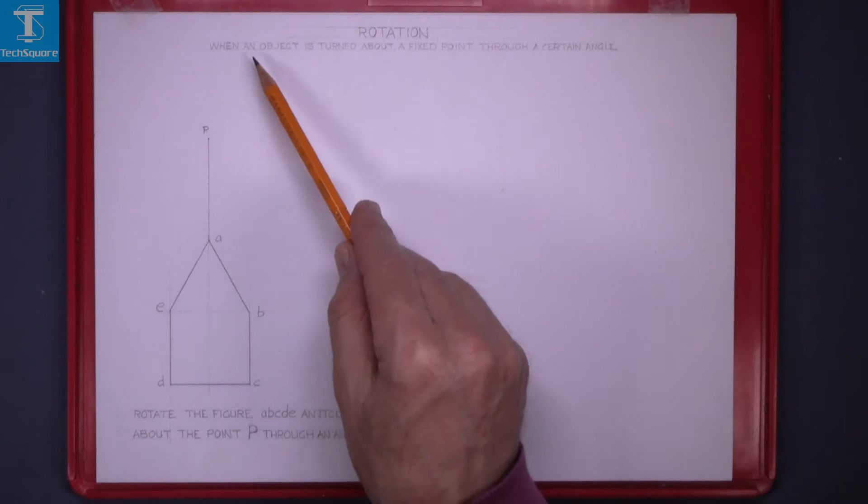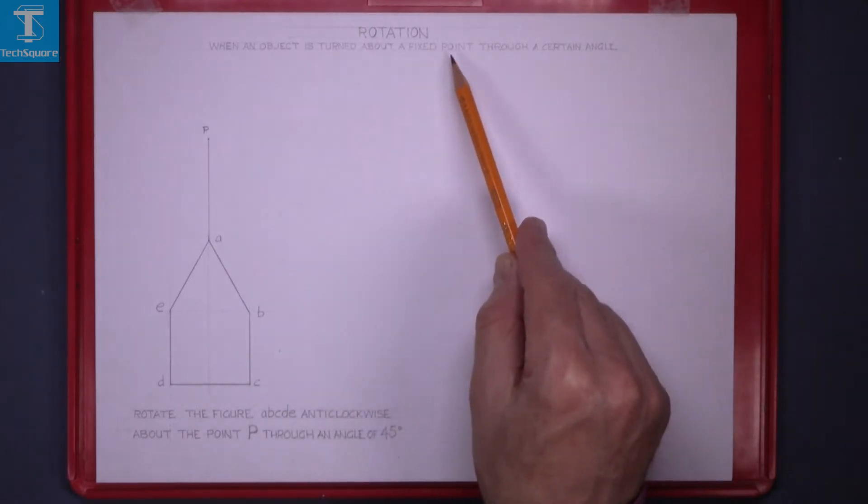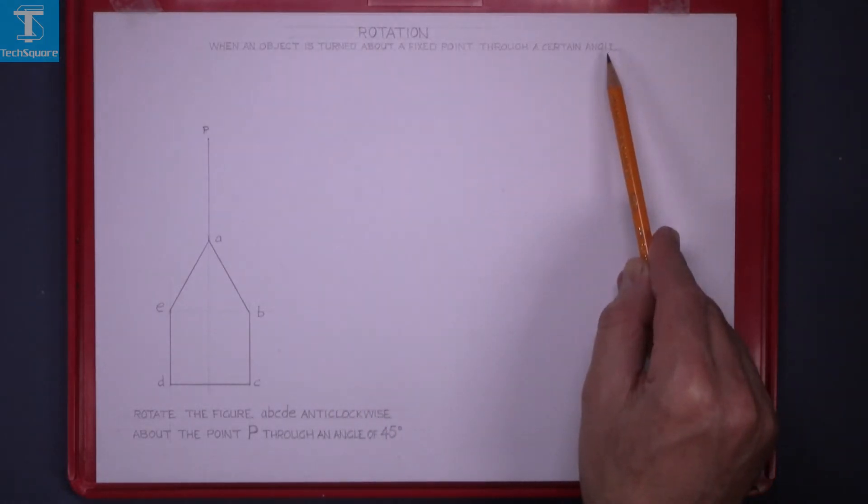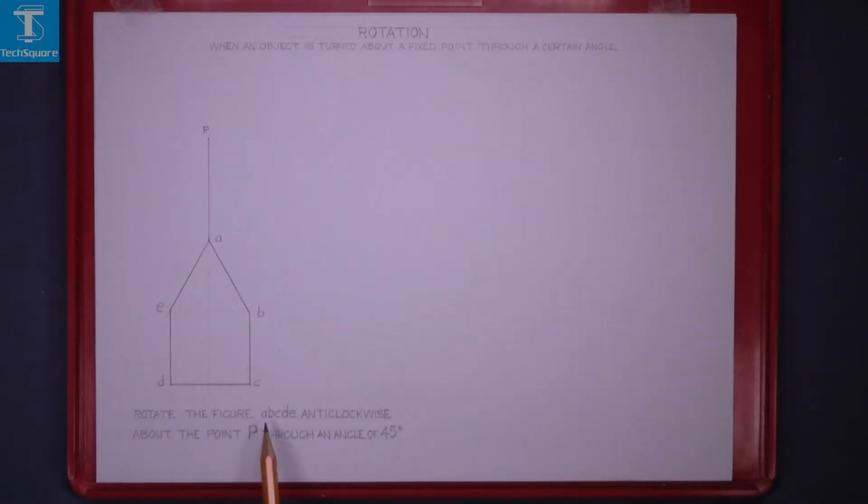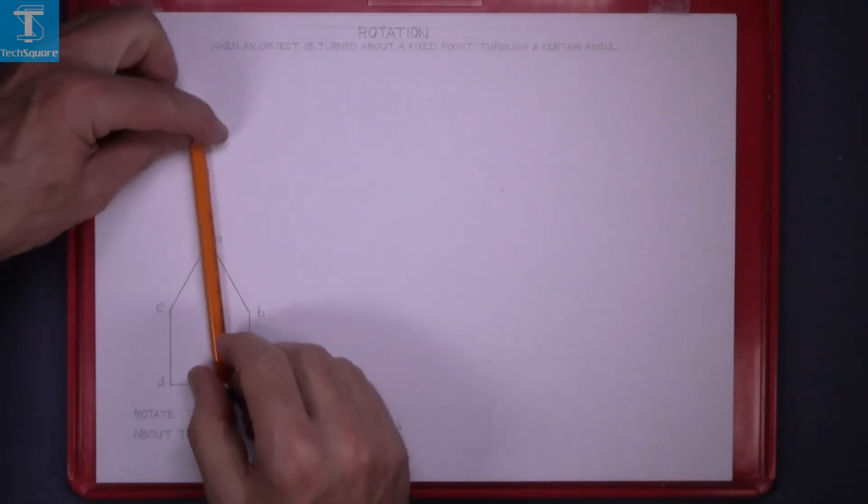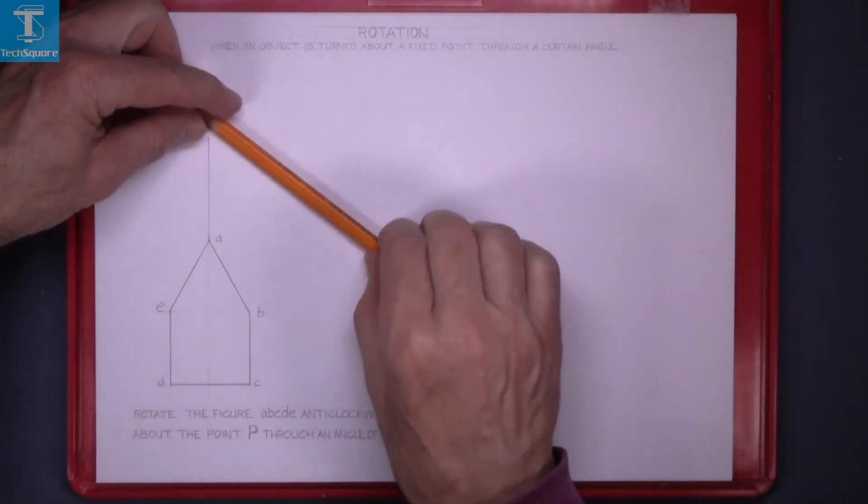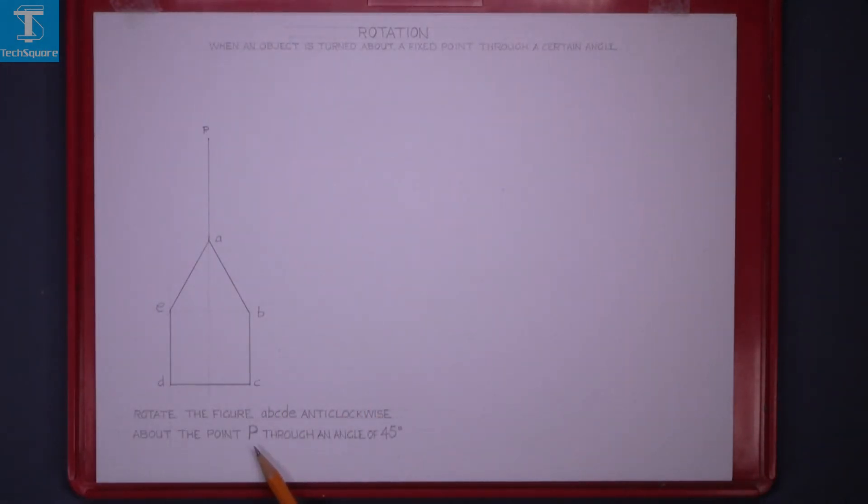Rotation is when an object is turned about a fixed point through a certain angle. Given this figure here, rotate the figure ABCDE anti-clockwise, that means from P rotate it this way, about point P through an angle of 45 degrees.